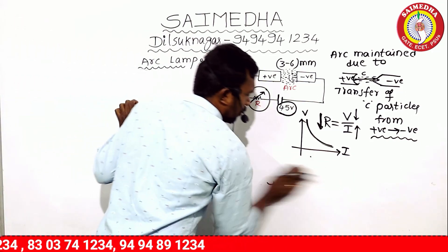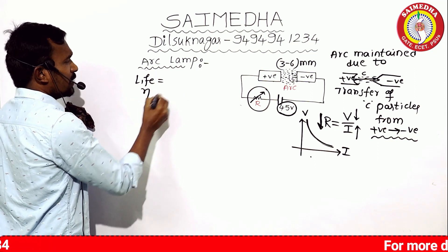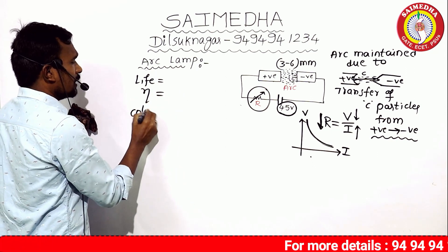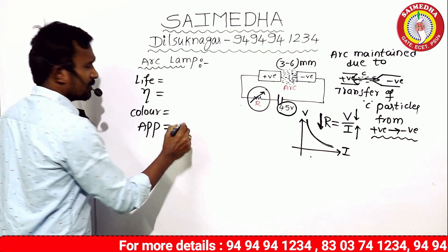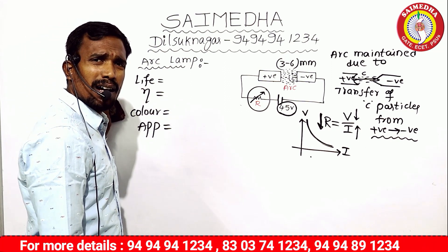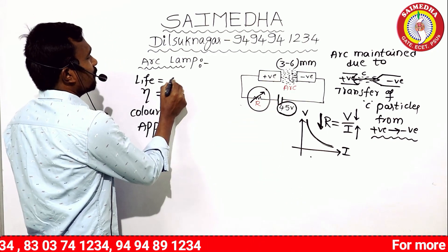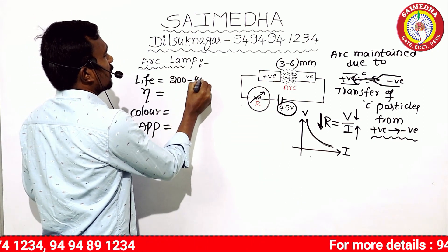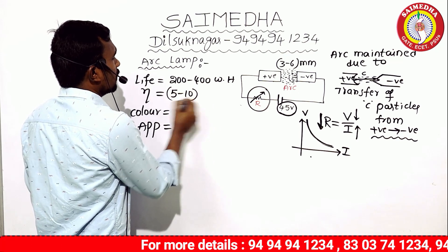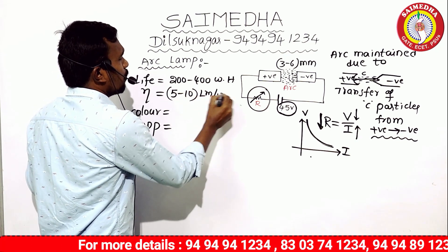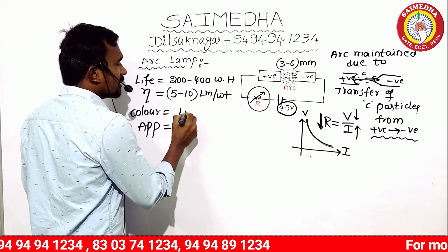The arc lamp data: 1 — negative resistance. 2 — lifetime. 3 — efficiency. 4 — color. Applications. Coating, gas, starting time, starting color. Lifetime: 200 to 400 working hours. Efficiency: 5 to 10 lumens per watt. Color: light green color.